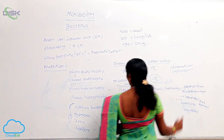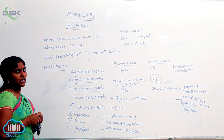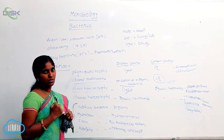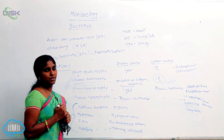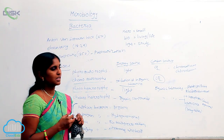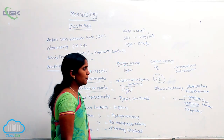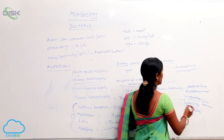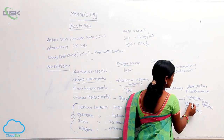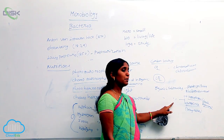Coming to the chemo-heterotrophs — they depend for energy as well as carbon source completely on organic compounds. They are again of two types: saprophytes and parasites. Saprophytes are free-living organisms that depend on dead and decaying material for both carbon and energy sources. Parasites are completely dependent on the living tissues of animals as well as plants.